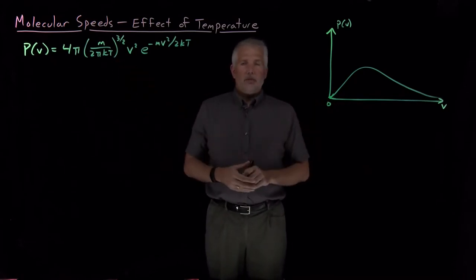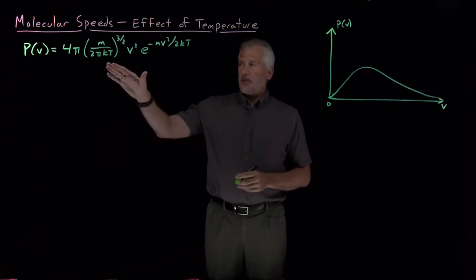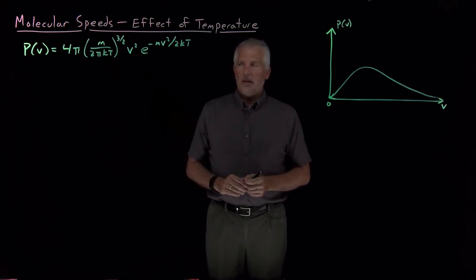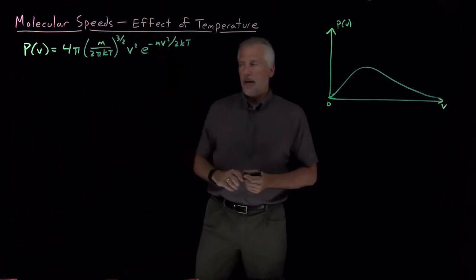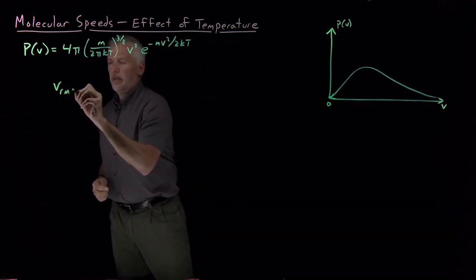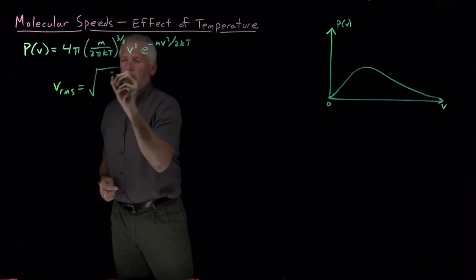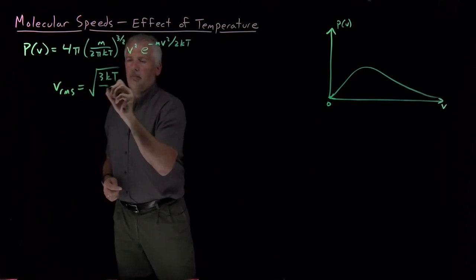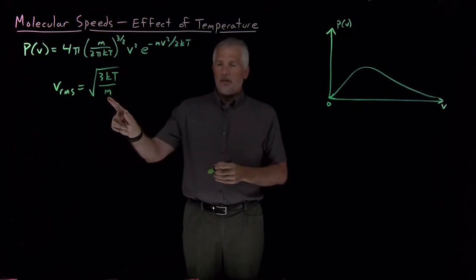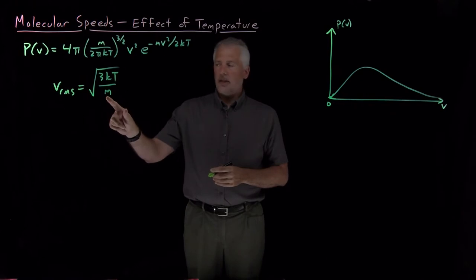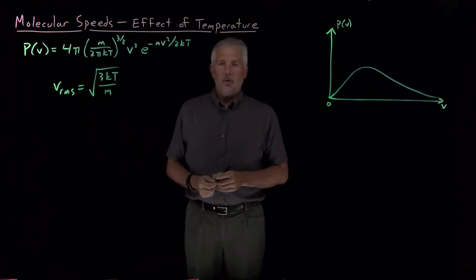The shape of that distribution and the average speeds of the molecules depend on several variables. They depend on things like the mass because, for example, if we remember what the root-mean-square speed of a molecule in a gas is, it depends on the mass. Molecules with larger masses, because m is in the denominator inside the square root, have smaller root-mean-square speeds.